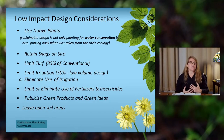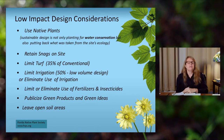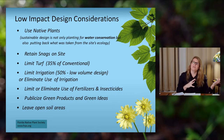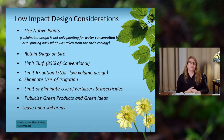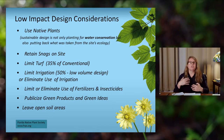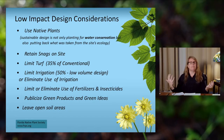For low impact design considerations, use native plants. Retain snags on site — snags are dead trees or you can cut the top out but leave some standing, because that's what a lot of insects forage on, and birds are looking for insects. If you're a business and don't want something dead up front, put it in the back. Limit your turf to 35% of conventional turf areas. Limit irrigation to low volume, and once plants are established, shut the irrigation off and only irrigate when needed — not every day or every week. Eliminate or reduce fertilizers and insecticides, and publicize the green products and ideas.